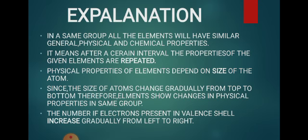General physical properties include melting point, color, and taste, while chemical properties describe how elements react. Chemical properties are similar within a group because chemical reactions involve electrons. In the same group, the number of valence electrons is the same, which is why chemical properties are similar.